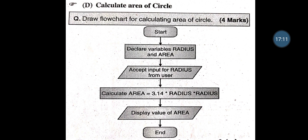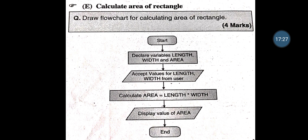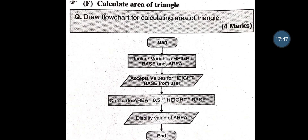Calculate the Area of Circle — Start, Declare variables Radius and Area, give the input for Radius, Calculate Area = Pi * Radius * Radius, Display the value of Area, and End. Calculate the Area of Triangle — Accept values for Height and Base from user, Calculate Area = 0.5 * Height * Base, Display the result of Area, and End.